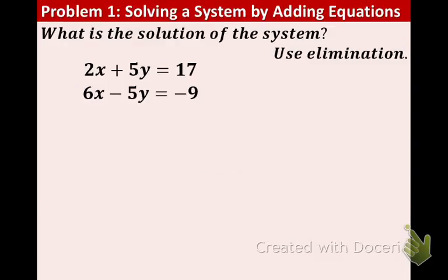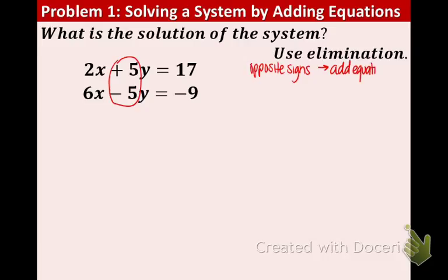Let's take a look at example one. We have 2x plus 5y equals 17 and 6x minus 5y equals negative 9. Our first step is to eliminate one of the variables. Since the sum of the coefficients — the numbers in front of the y — is 0, we're going to add the equations to eliminate the y. Look at this: plus 5 and minus 5. When you add those together, you get rid of the y's. When you have opposite signs like that, you add the equations. The coefficients must be the exact same number.